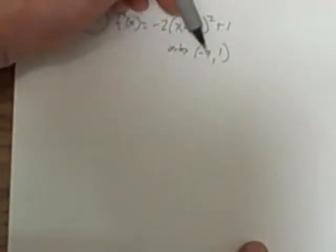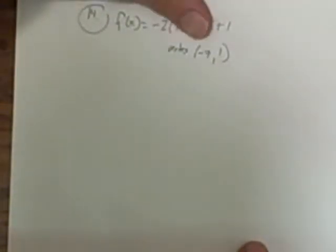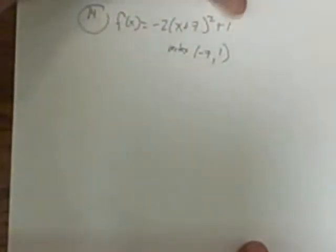Remember another way to think about this is what x value makes this a 0, negative 7. When x is 0, this whole thing is a 0, so the output, the y, has to be 1.